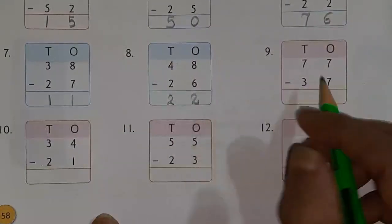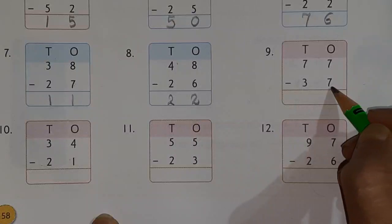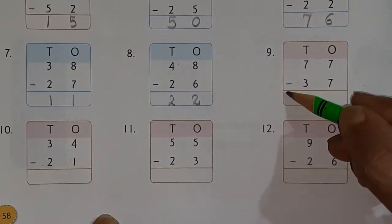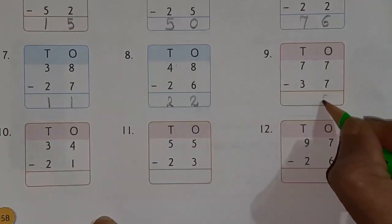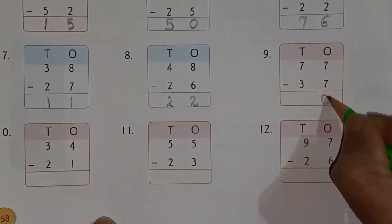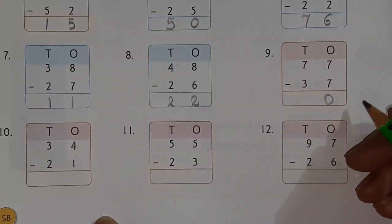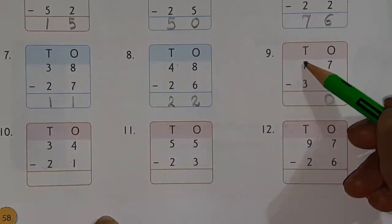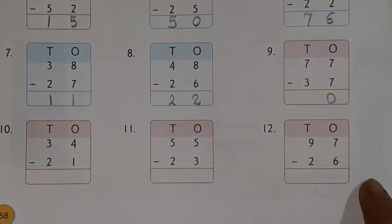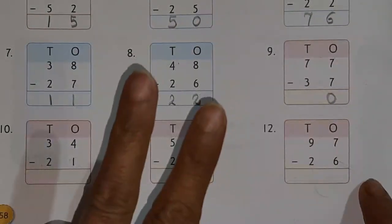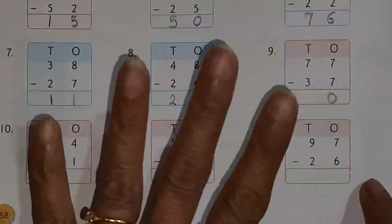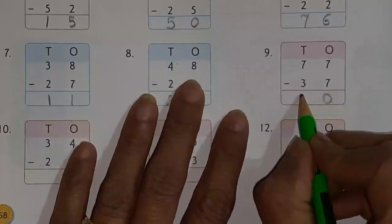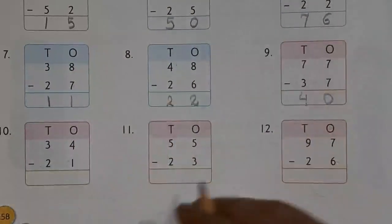Next one: 77 minus 37. Both the numbers in the ones column are the same — 7 and 7 — in subtraction both the same numbers give 0. So write 0. After 3 count till 7 — 4, 5, 6, and 7 — 4 fingers, so your answer is 40.